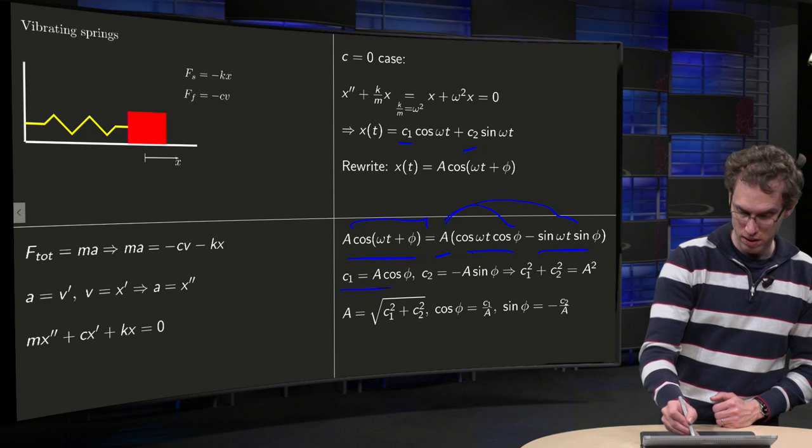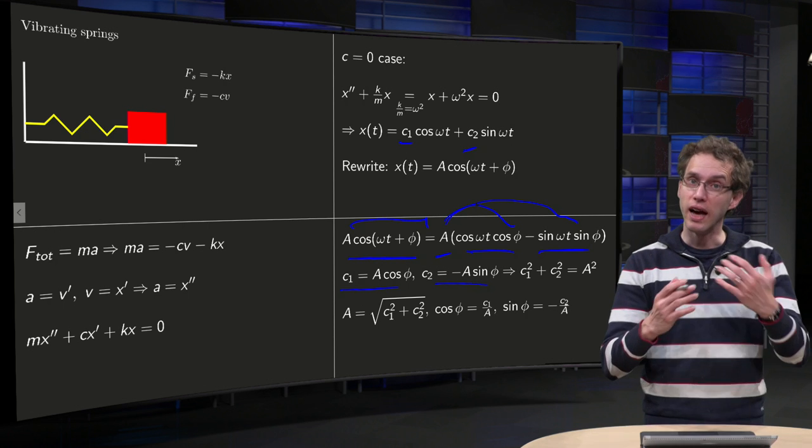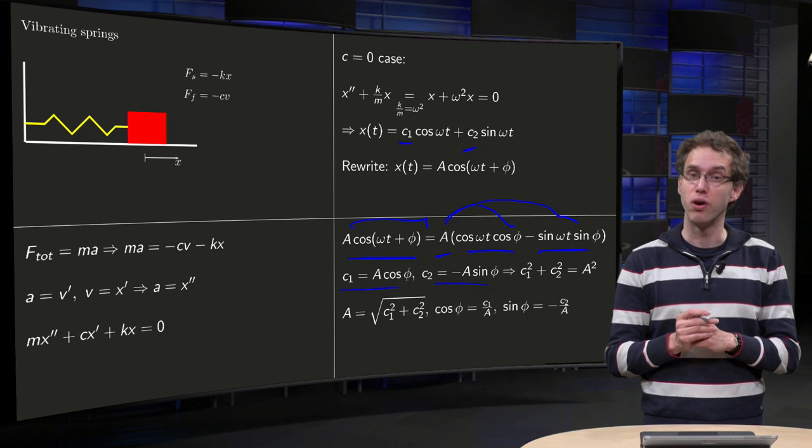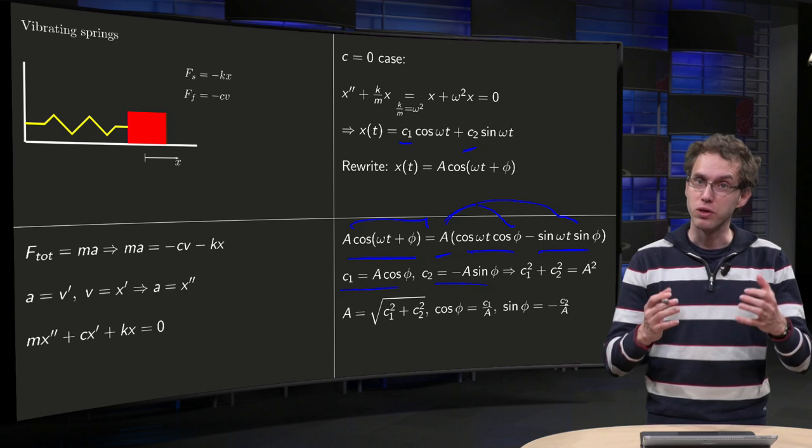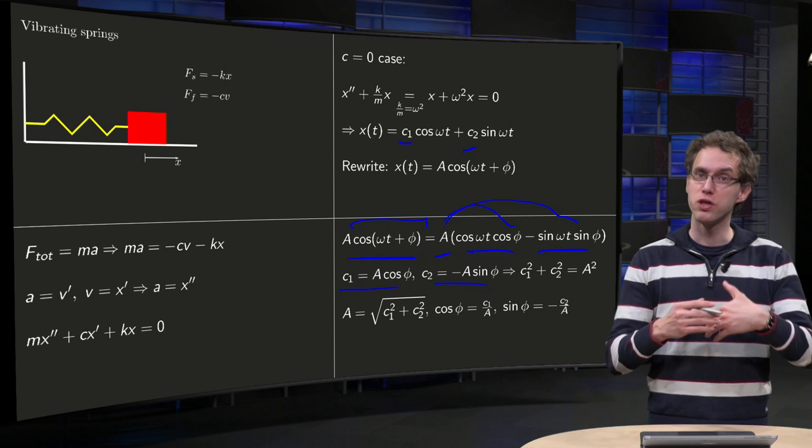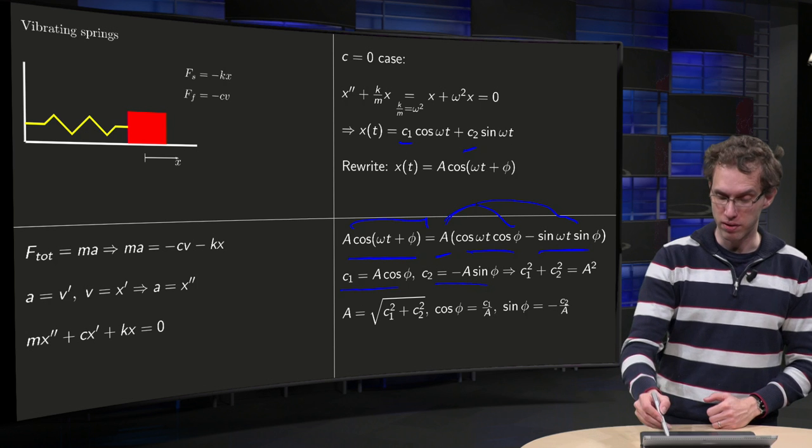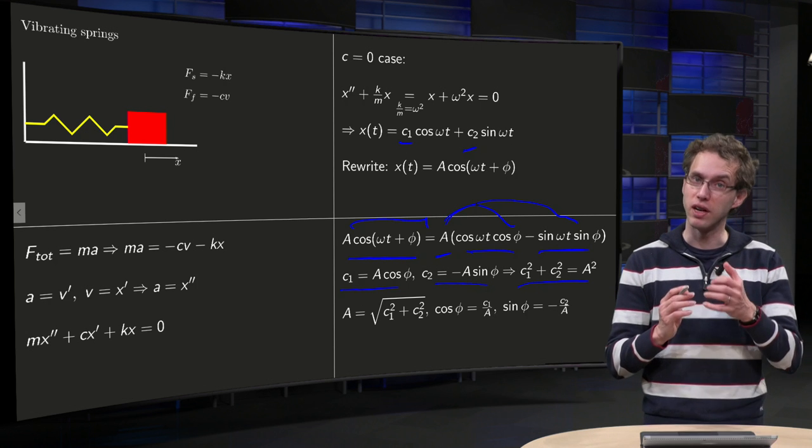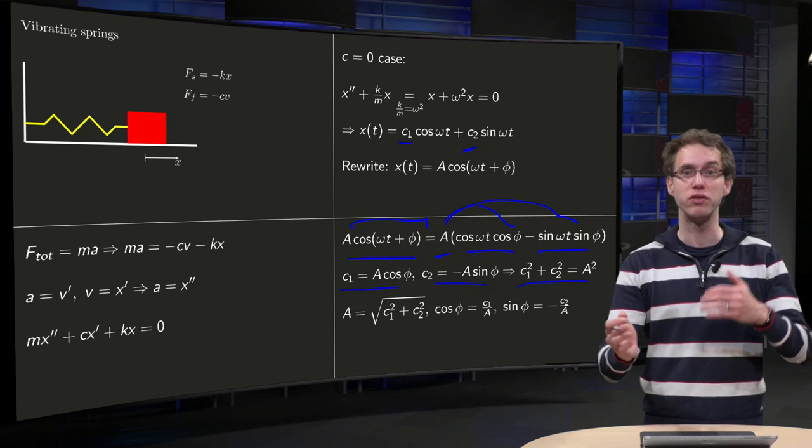So we can express A and sine phi in terms of c one and c two. I want to solve for A in terms of c one and c two. Well, square and sum up, we get A squared equals c one squared plus c two squared, so that's how we can find A once you have c one and c two.